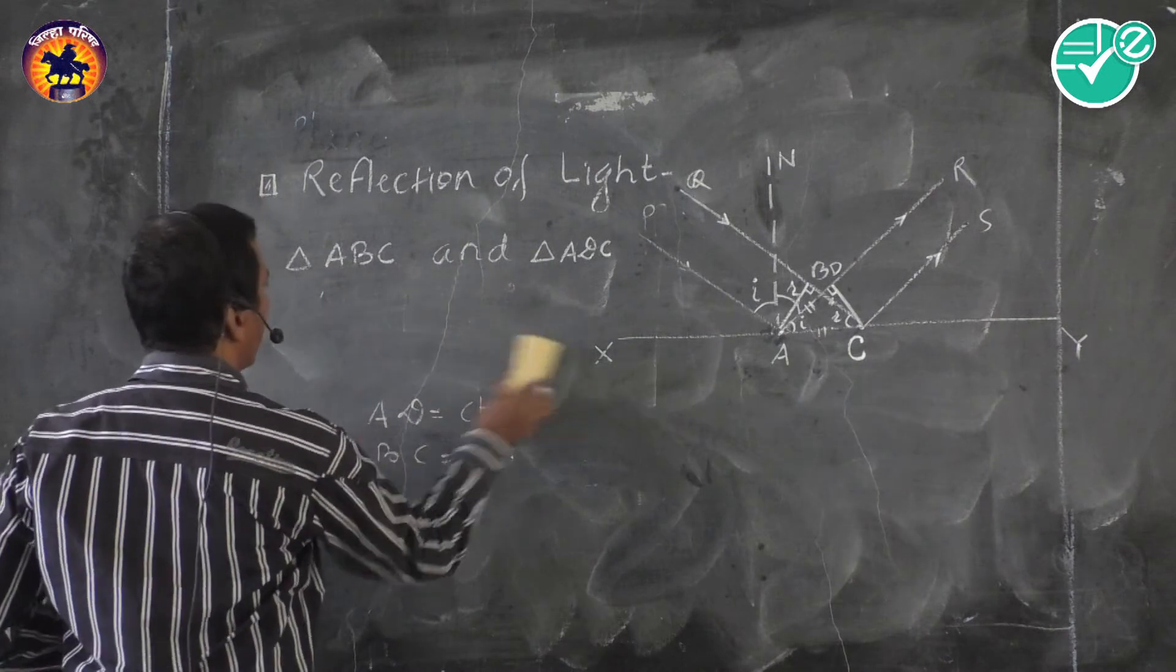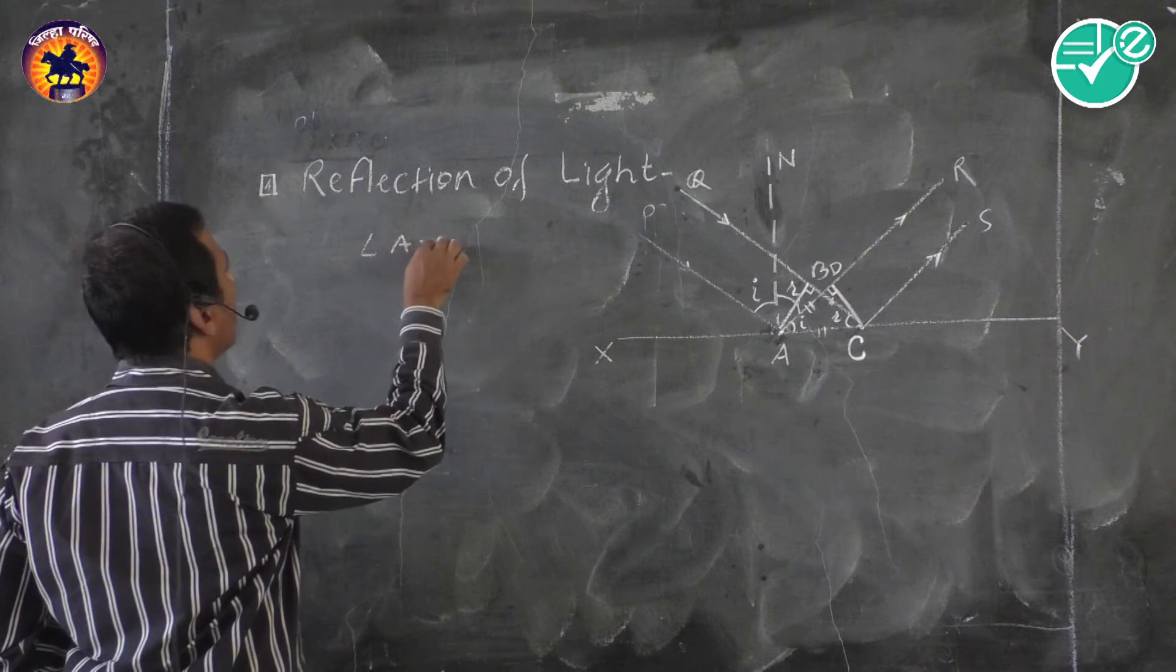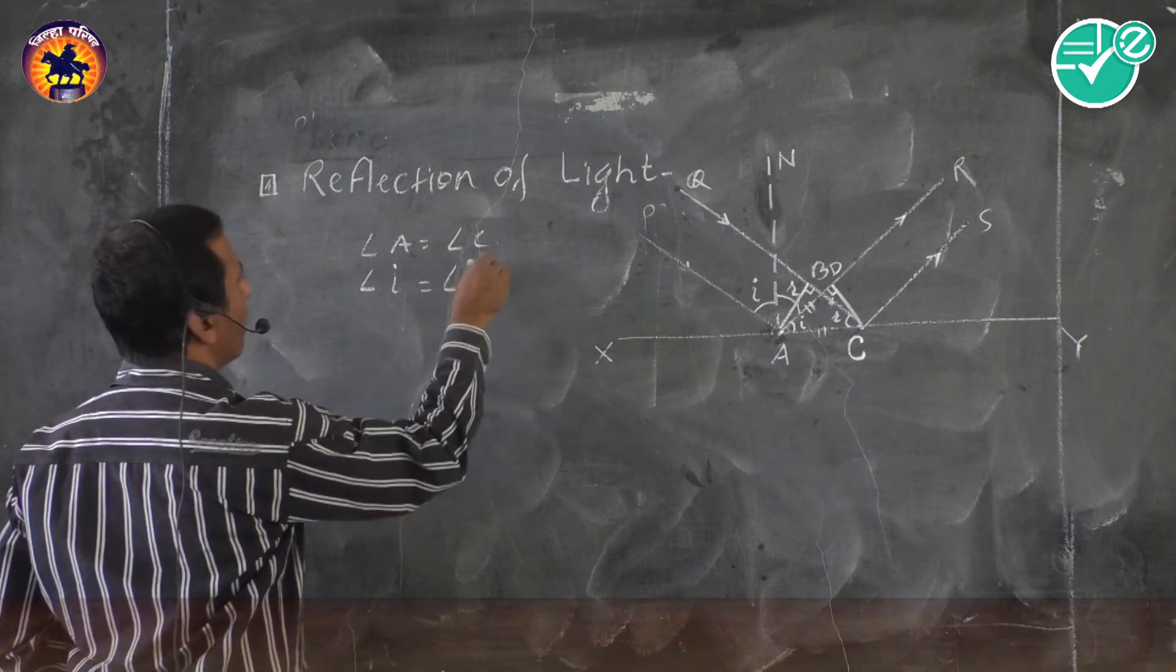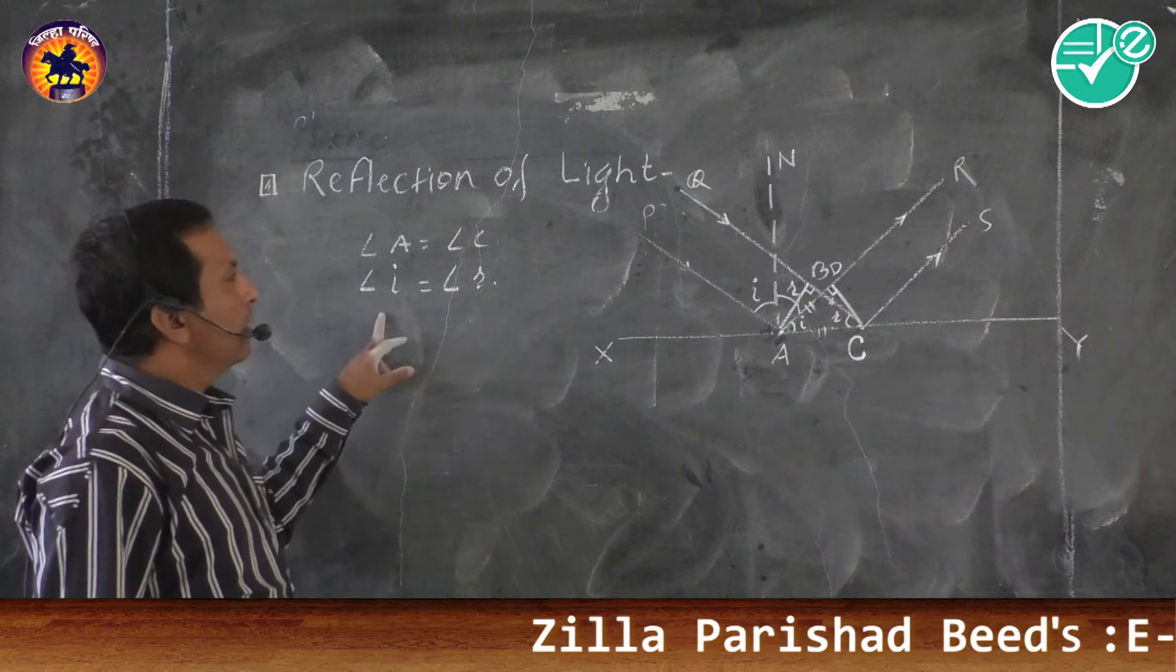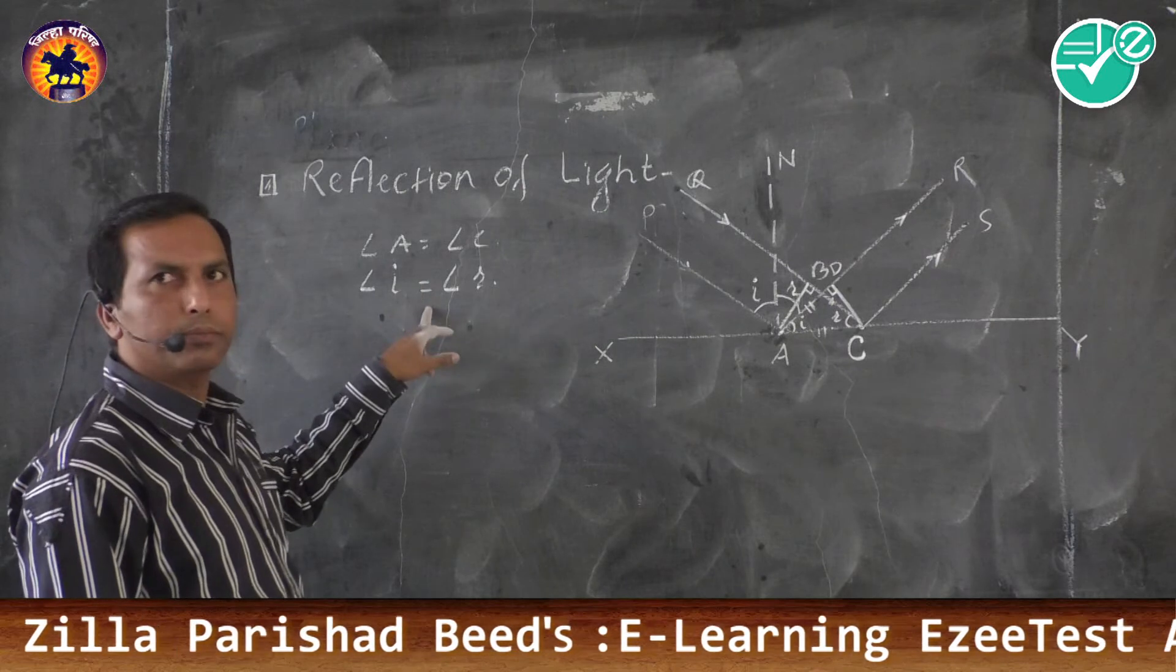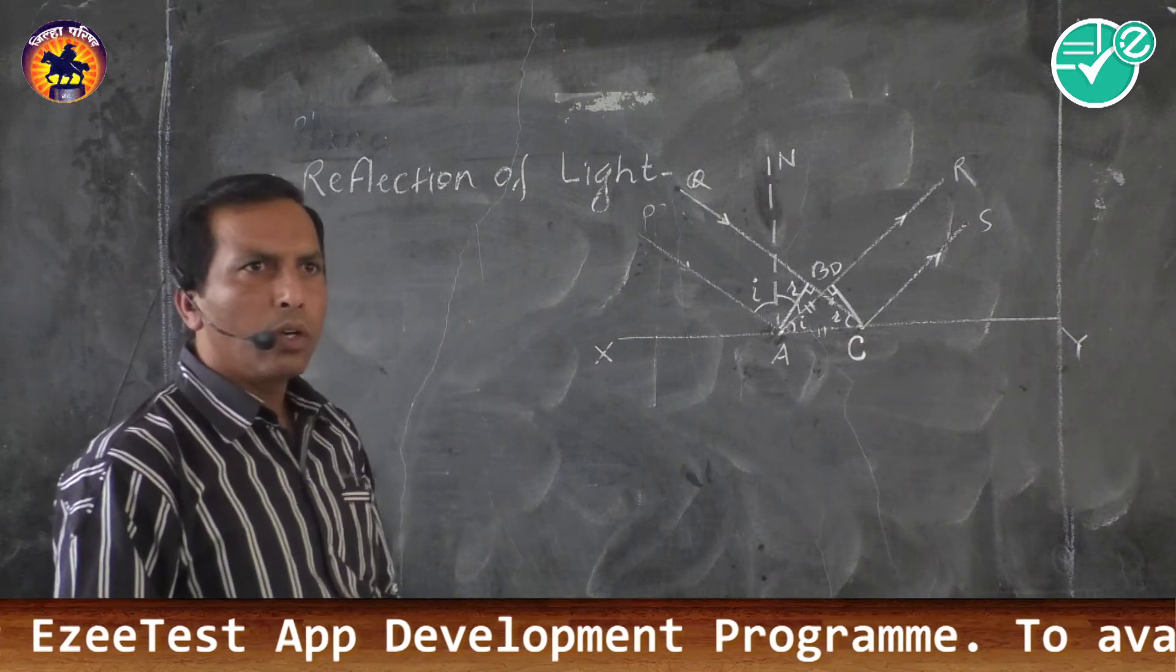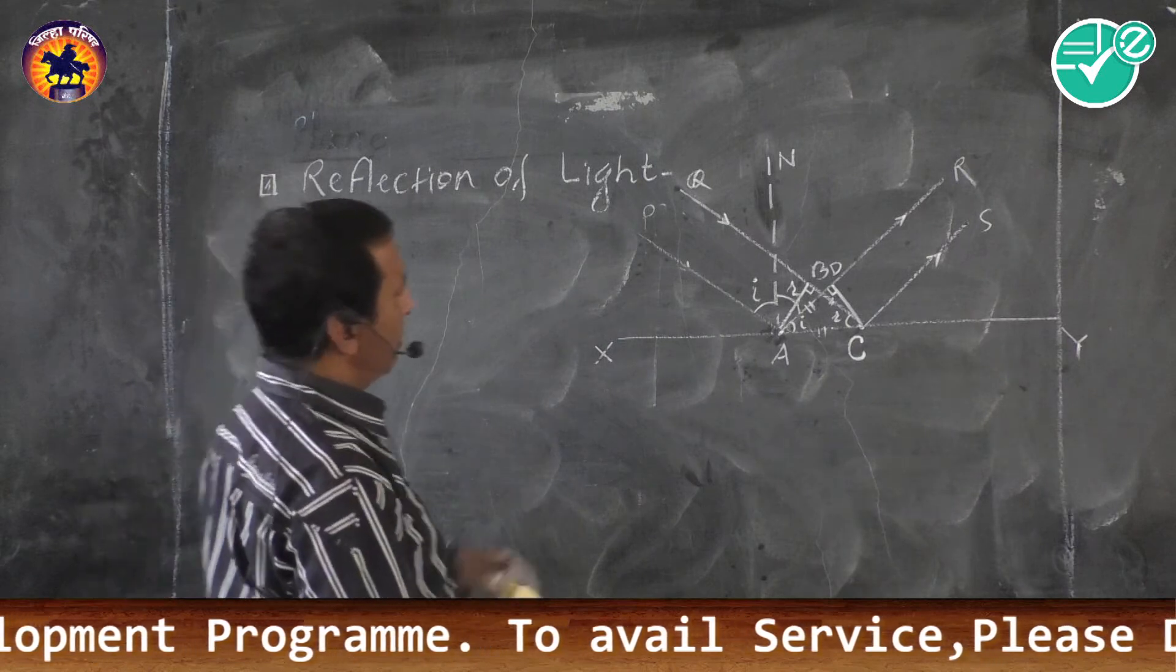Using this law, we can put angle A is equal to angle C. Which means that angle A is nothing but angle I and angle C is nothing but angle R. Which means that angle of incidence is equal to angle of reflection. This is the reflection of light on the basis of Huygens principle. There are two or three laws.